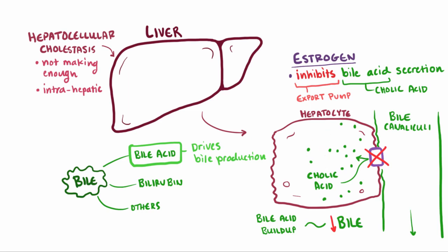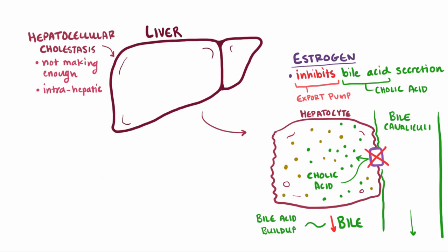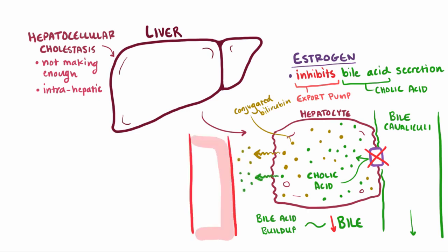When the excretion of bile components like conjugated bilirubin are down, but they're still being conjugated, they also build up along with the bile acids, and eventually it's thought that they diffuse, or are exocytosed, into the interstitial space, where they can access the blood supply.